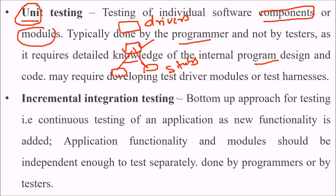Incremental integration testing is a bottom-up approach for testing. It involves continuous testing of an application as new functionality is added. Once you add functionality, you need to check that it may not have introduced any errors. Application functionality in modules should be independent enough to test separately.